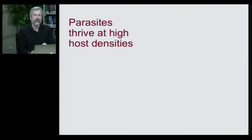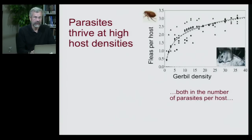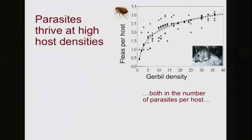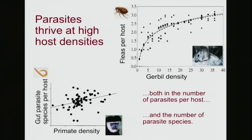Finally, parasites love when hosts are at high population densities. In a study of gerbils, the number of fleas per animal is much higher at high gerbil densities than at low densities — so the number of parasites per host goes up with population density of the host, and the number of parasite species infecting those hosts also increases. The bottom graph shows a study of black and white colobus monkeys, where the number of different gut parasites carried by each monkey also goes up as the host population density increases.